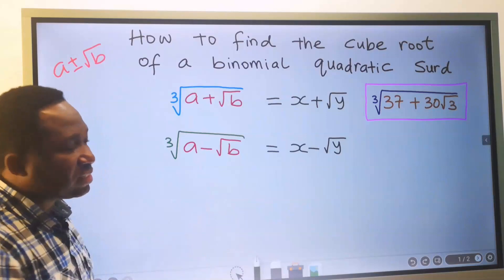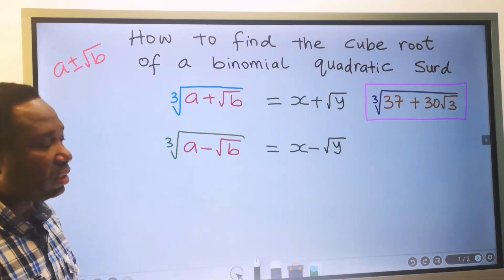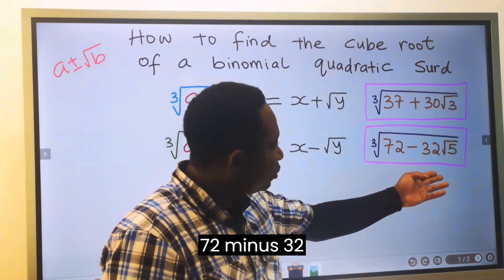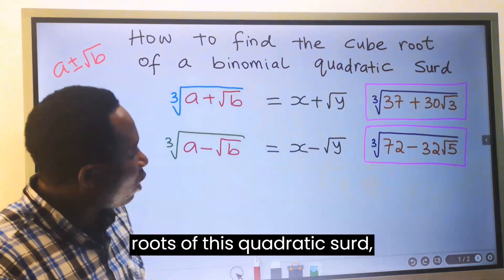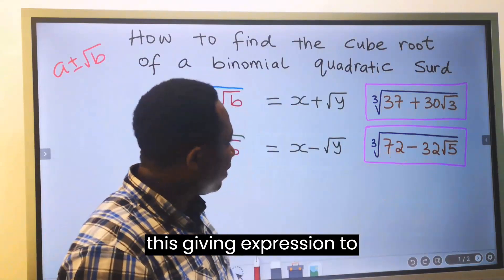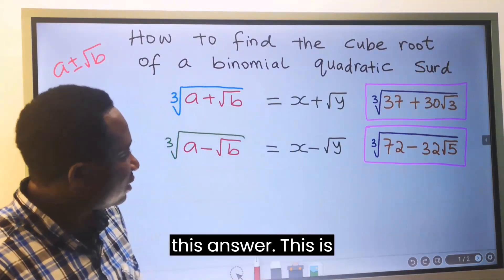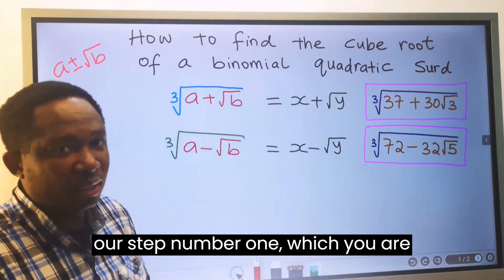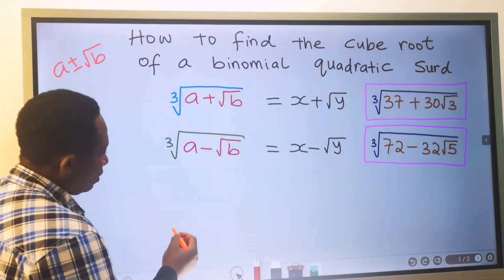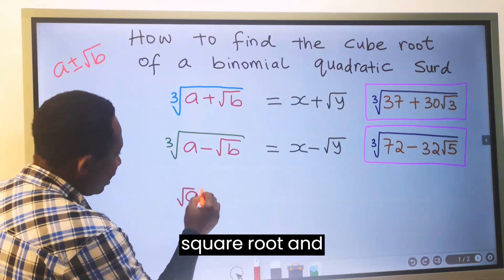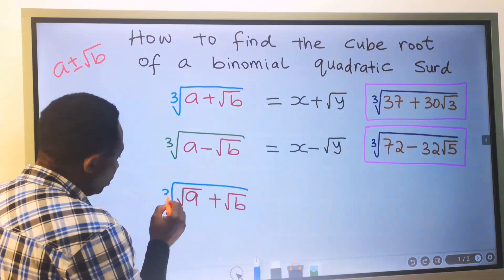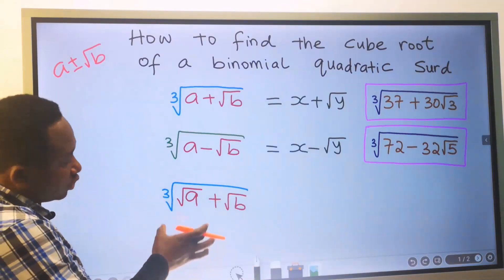This is usually the first step before you start solving the question. For instance, if we have 72 minus 32 root 5, and we are to find the cube root of this quadratic surd, the first step is to equate this given expression to the answer form. This is step number 1, which you are going to see shortly. Observe a variation: if we have the square root of A plus the square root of B, and we are to find the cube root of this quadratic surd.